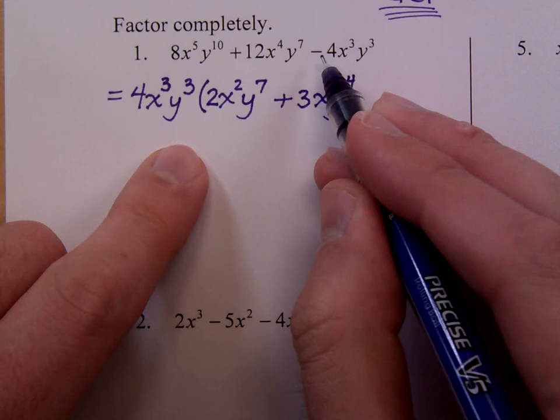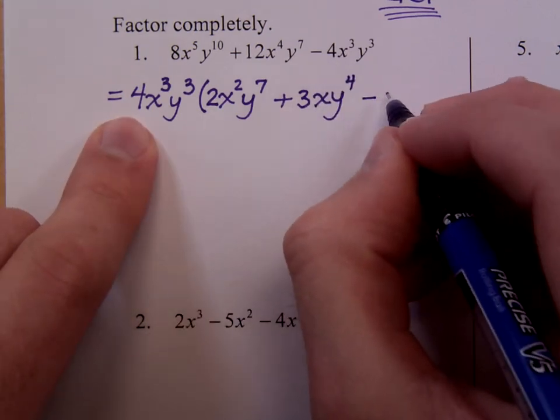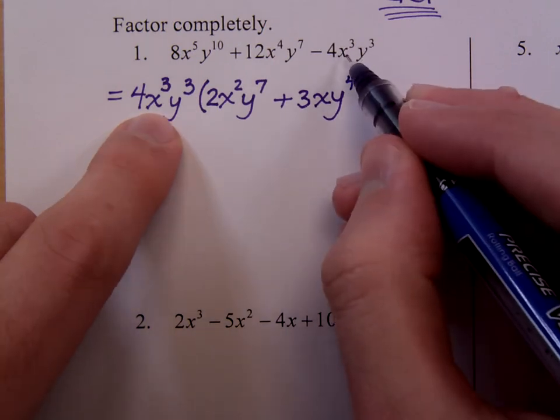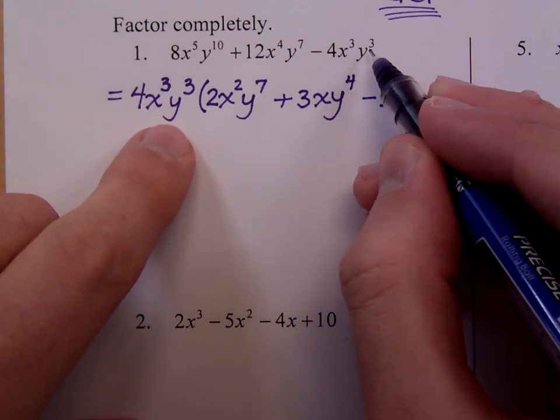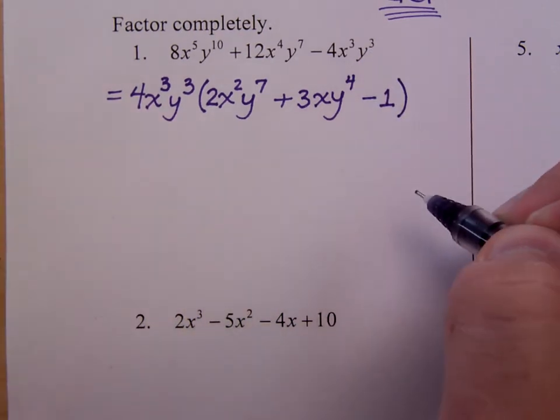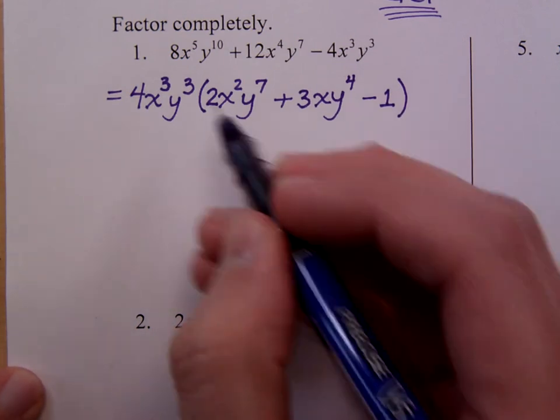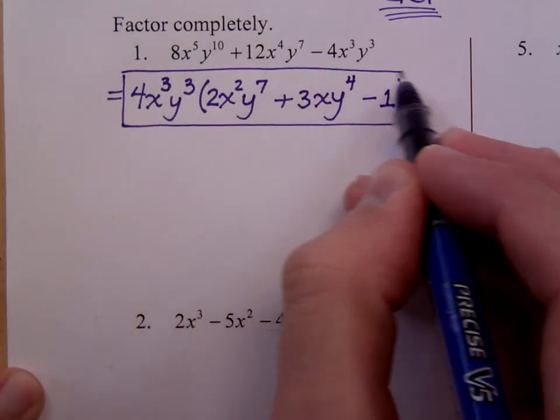And then finally here, this is a negative 4. So negative 4 is made up of 4 times negative 1. You had x to the 3rd but you took out x to the 3rd so there are no more factors of x left. You had y to the 3rd and you took out y to the 3rd so you're done. The only other thing you could try to do is to see if this guy factors further. But it doesn't. So this is all that you can do.